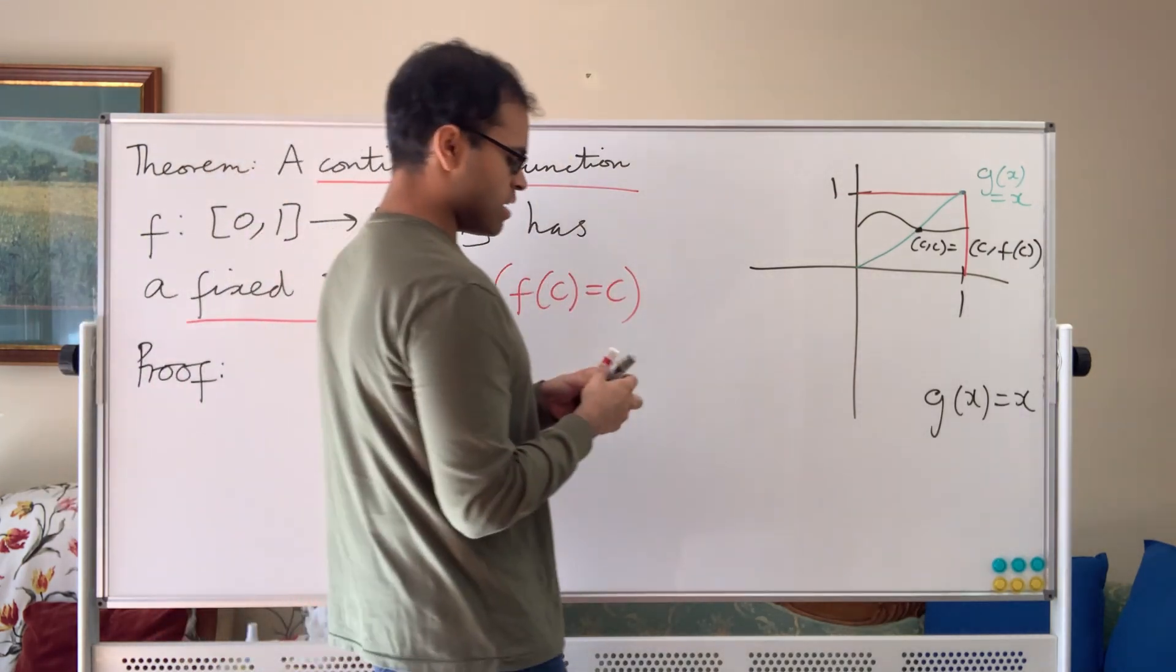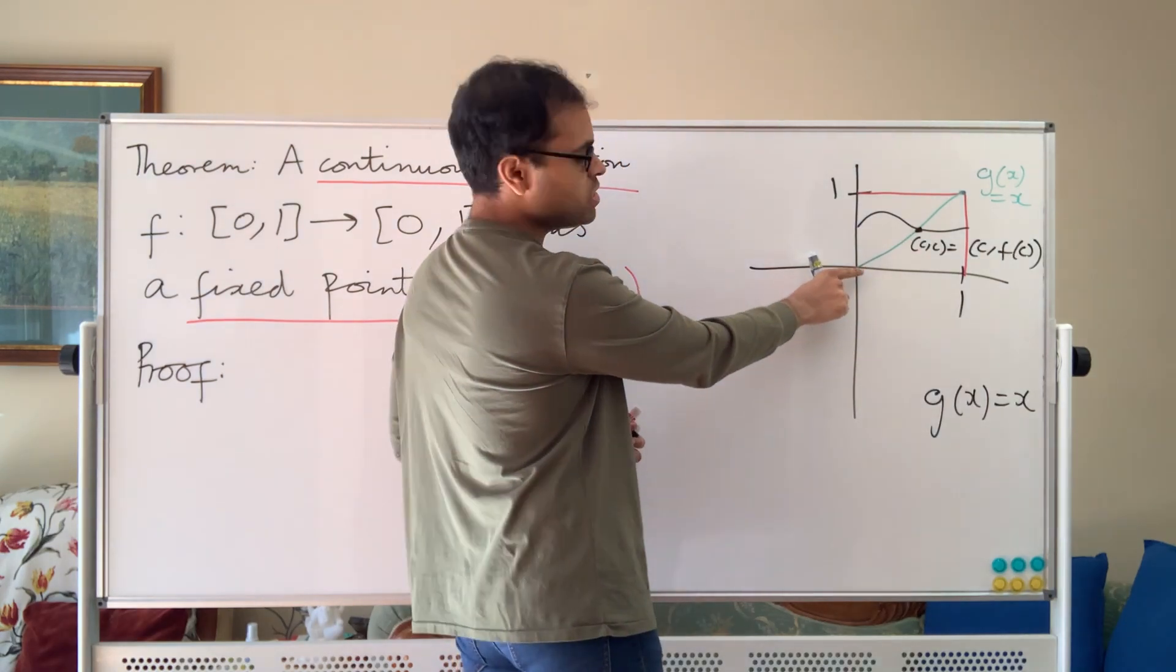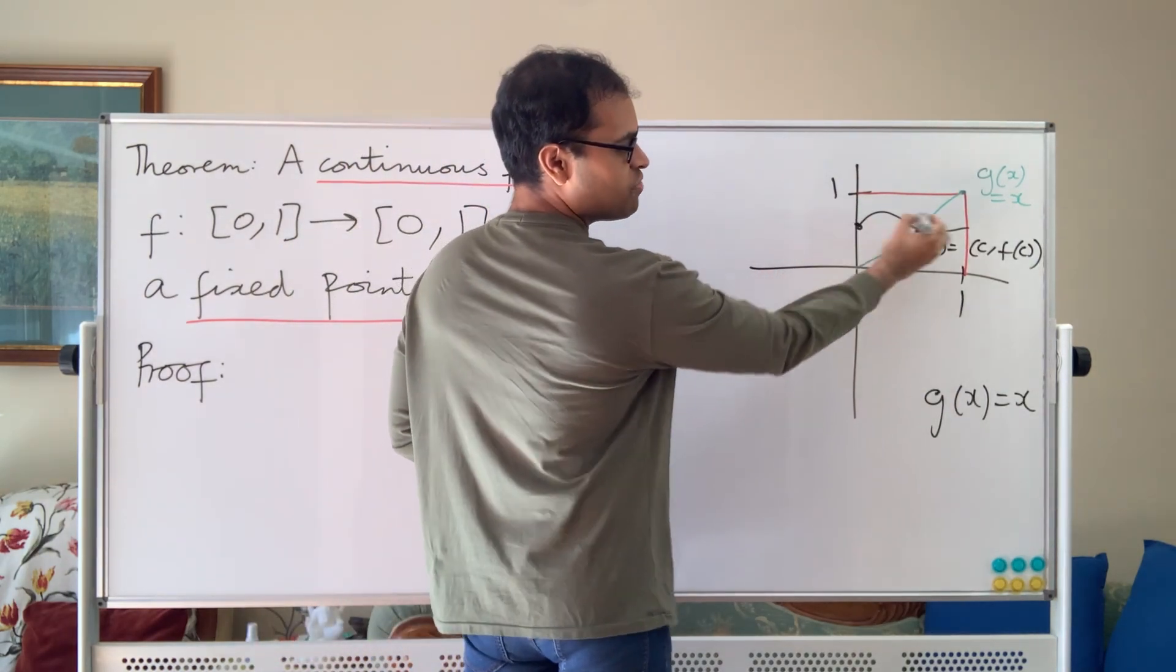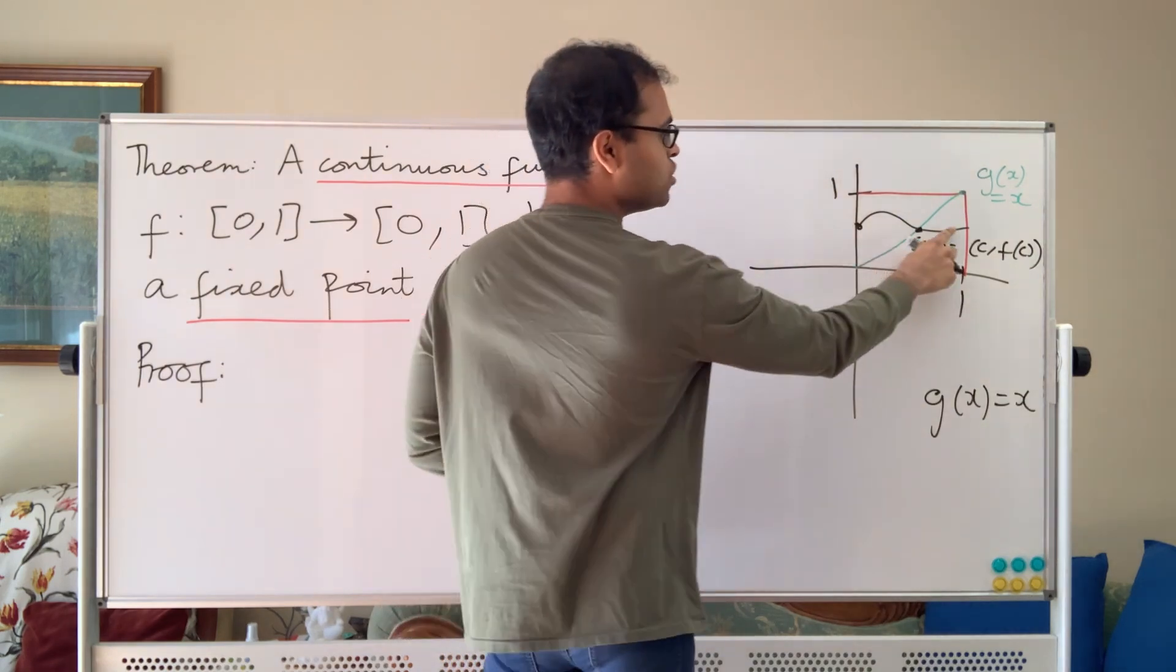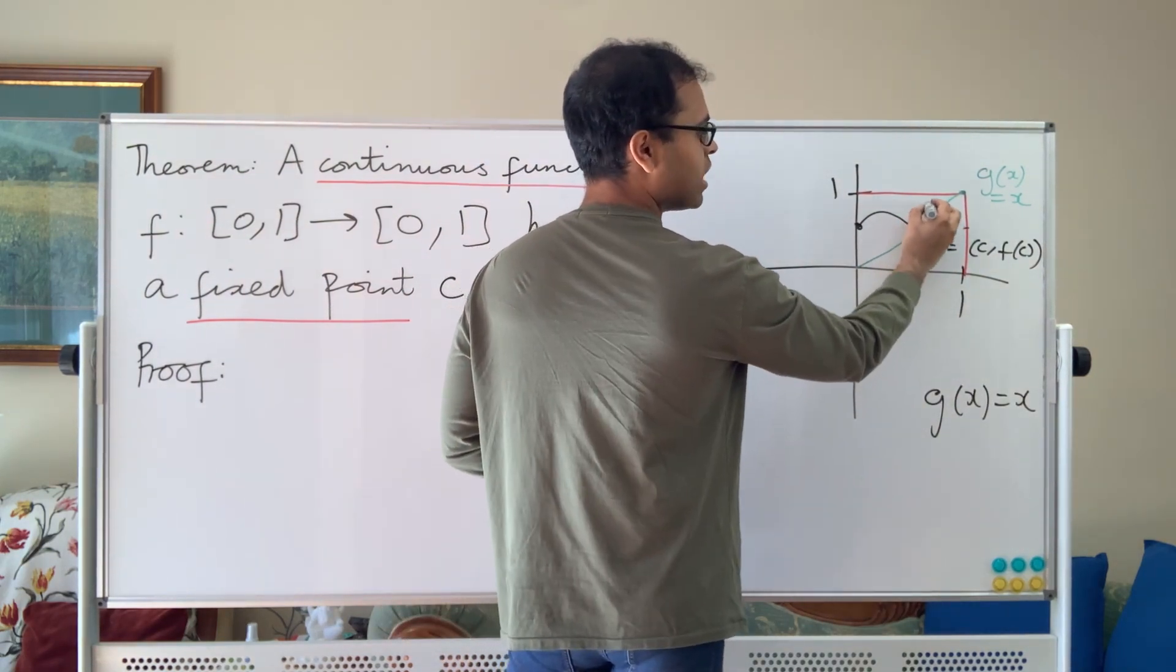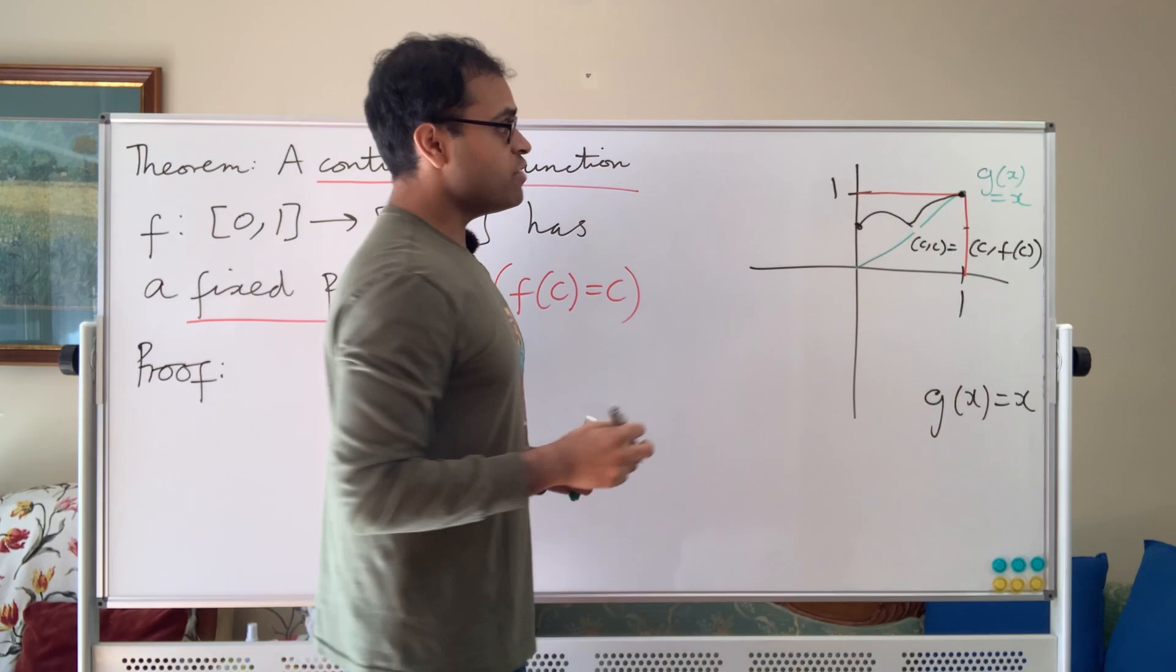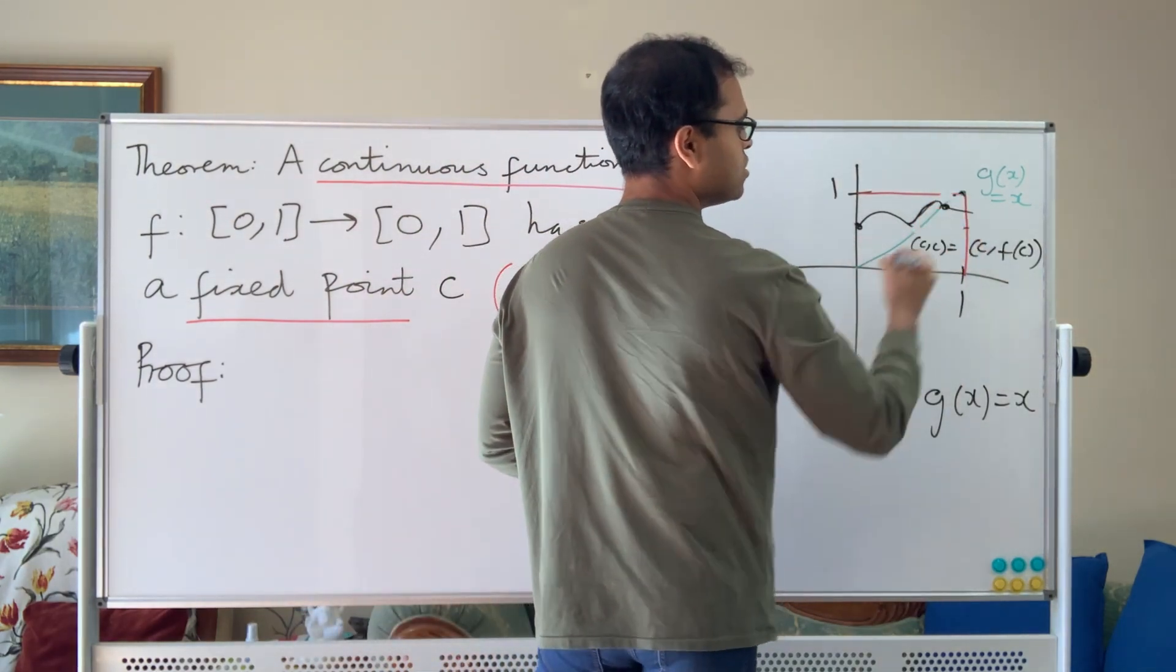Why should you expect this to be true? Well, think about it intuitively and visually. If you have the graph, it can't start at zero, because if it starts at zero, that's your solution: f(0) equals 0. But if it starts up here, then there is no way for it to get to the other end without crossing the green line at some point. Even if it tries to avoid the green line for as much as you like, eventually it's narrowed and funneled in there, and it has to have the property that f(1) equals 1. If not, then at some point it has to cross the green line, and that's going to be your solution.